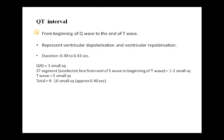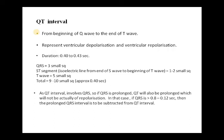The duration of the QT interval is 0.40 to 0.43 seconds. To remember this: the QRS complex is up to 3 small squares (0.04–0.12 s), the ST segment is about 2 to 3 small squares, and the T wave is 5 small squares — totaling approximately 9 to 10 small squares, giving roughly 0.40 seconds. So T wave = 5 small squares, ST segment = 2 small squares, QRS = 3 small squares — total 9 small squares ≈ 0.40 seconds or 400 milliseconds.